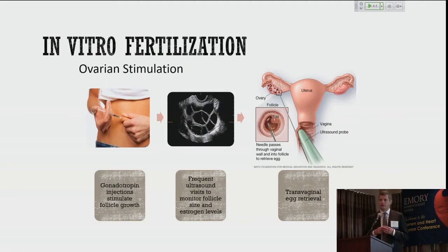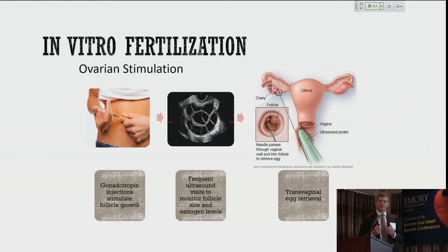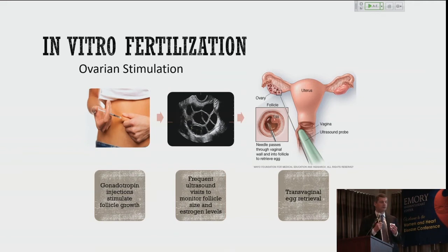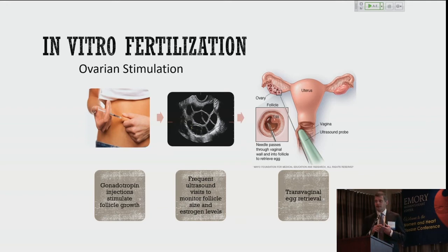How does IVF work? Normally a woman's ovary makes one mature egg grow each month. With IVF, because there's a lot of attrition between harvesting an egg and getting a usable embryo, it would be very inefficient to collect just one egg per month. So we stimulate the ovaries to make lots of mature eggs by having the patient take injectable gonadotropins — FSH and LH. We add a third medication to prevent ovulation, a GnRH receptor antagonist. She takes these by self-injection for about 10 to 12 days on average.